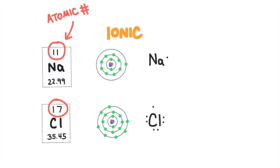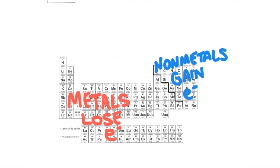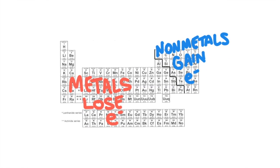Both elements want to have eight valence electrons to be stable. Chlorine is so close to eight, it will simply gain an extra electron to get eight. Sodium would have to gain seven electrons in order to have eight — that's too many. But underneath sodium's valence shell, there's another shell with eight electrons. So instead of gaining seven, it's easier for sodium to lose its one valence electron and uncover the stable eight electrons in the shell below. Metals on the left side of the periodic table always lose their valence electrons to become stable, while non-metals on the right side are going to gain electrons to become stable.